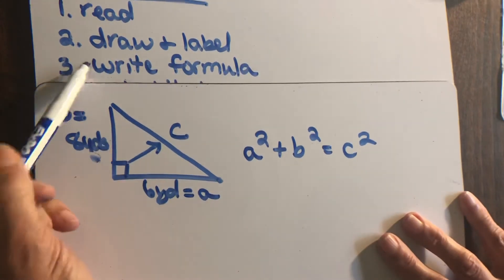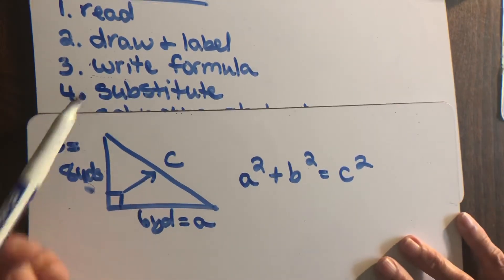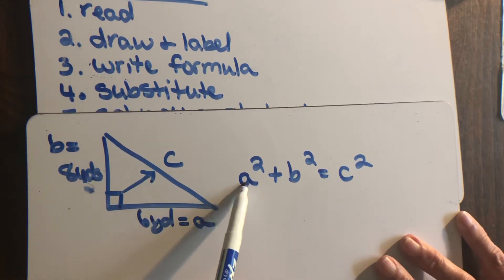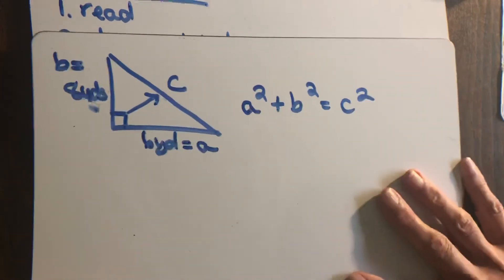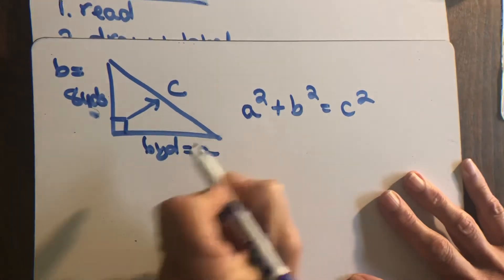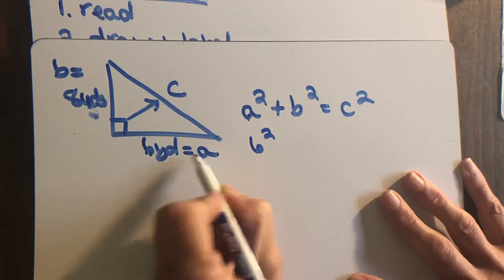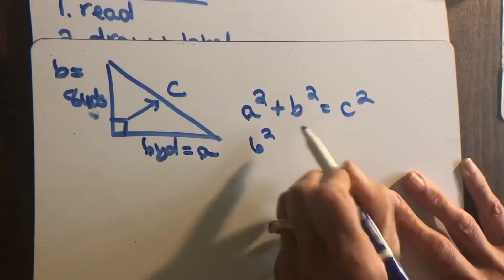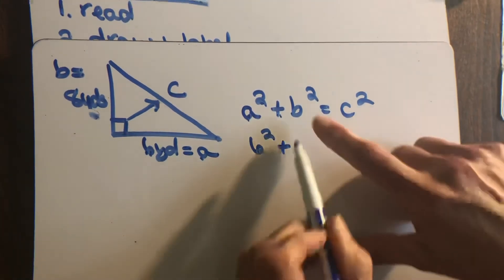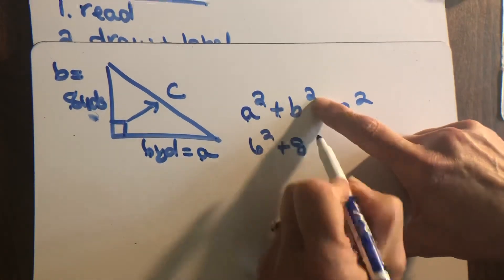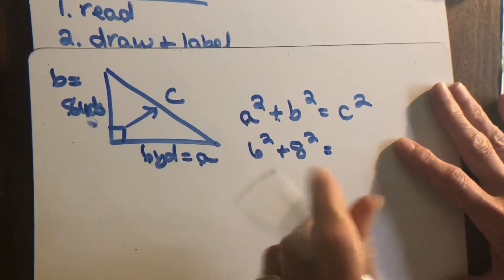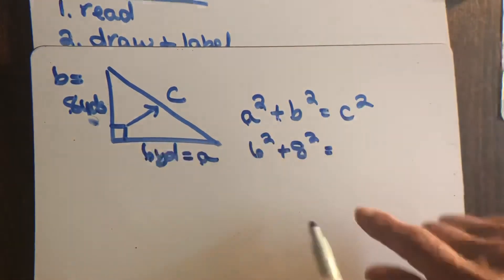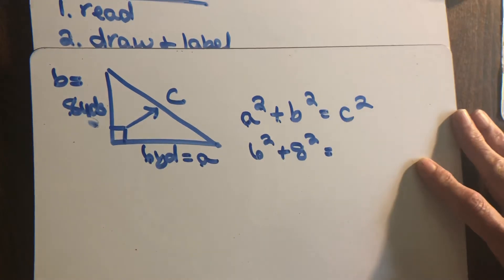Remember we've got to write our formula, then substitute. Substitute means take the letters in your formula out and put the numbers that are labeled on your picture in. Just like when you have a substitute teacher, they stand in. So 6 is going to go right there because I have it labeled as A. Keep the squared, keep the plus sign. B is now 8. Keep the squared because all this other stuff is part of my formula. Keep the equal sign. Notice how I keep it lined up.